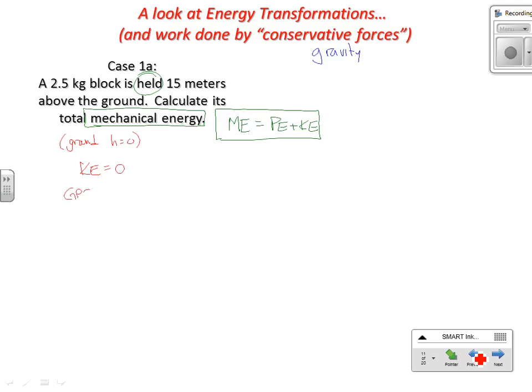Our GPE is MGH. 2.5 times 15 times 9.8 meters per second squared. We use 9.81 as our value of G. So GPE for us is 2.5 times 15 times 9.8, which equals 367.5 joules. Therefore, since kinetic energy is zero, total mechanical energy is 367.5 joules.